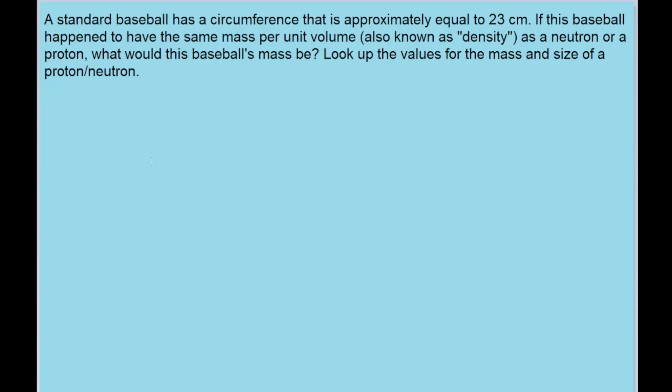In this problem, we're given the circumference of a baseball, and we're asked to find what its mass would be if it had the same density as a proton or a neutron, both of which have the same density. So the first thing I'm going to do in this problem is figure out what the volume of the baseball is, because we need the volume if we want to figure out the density.